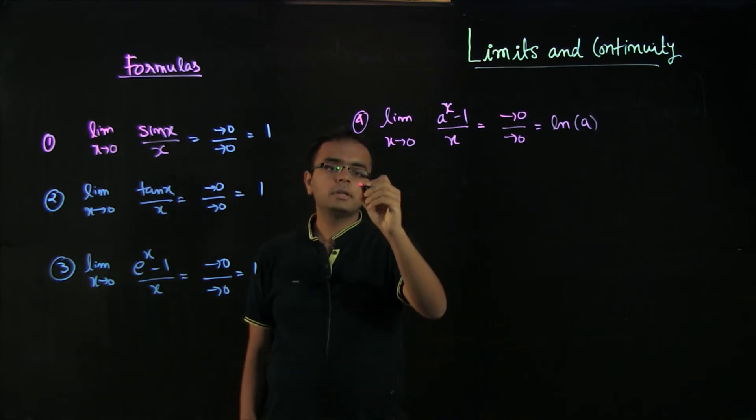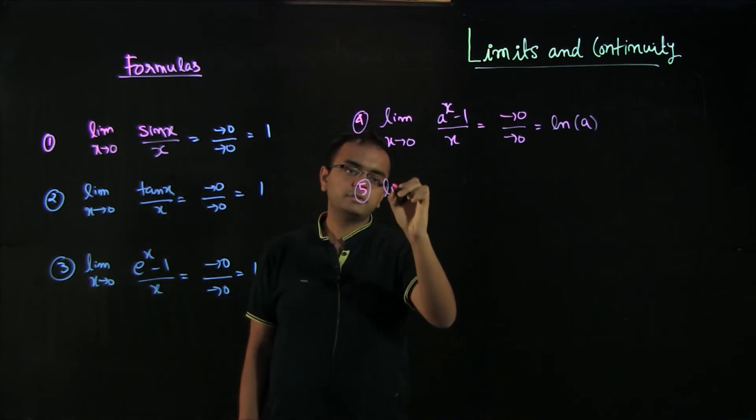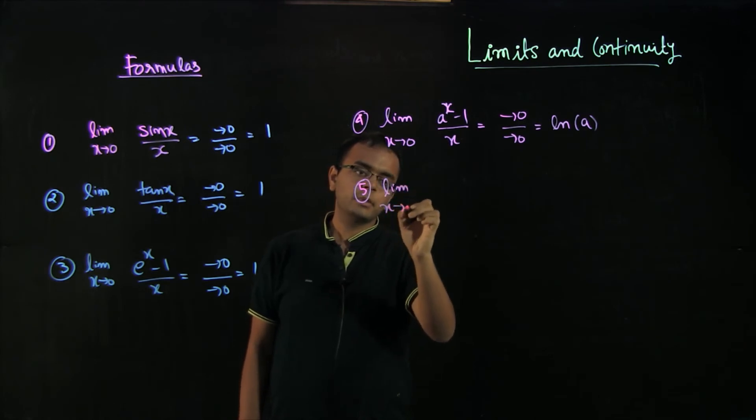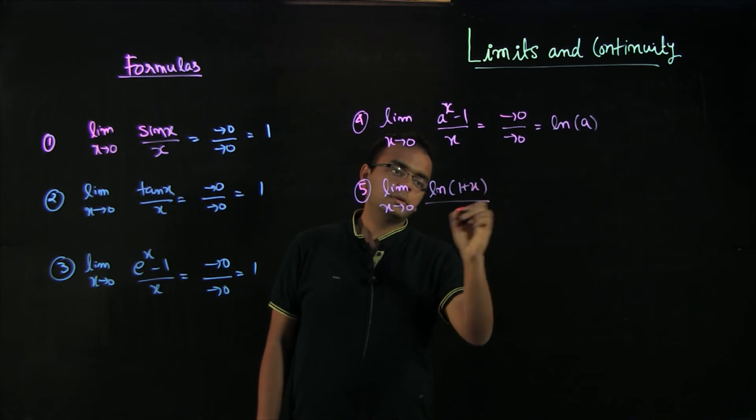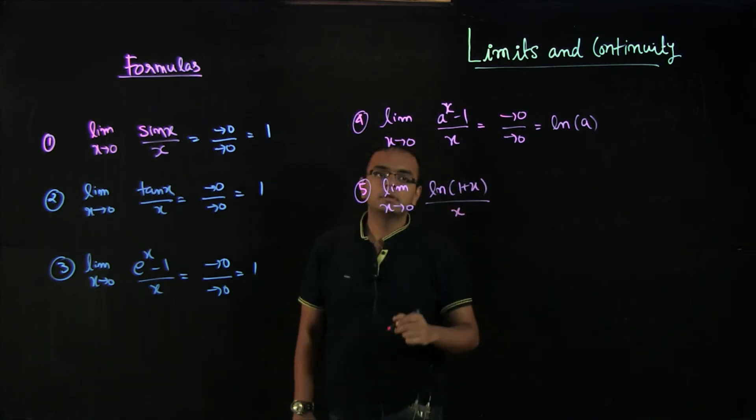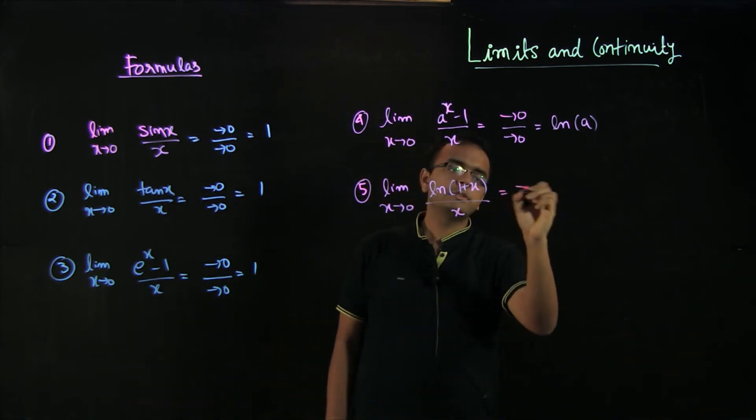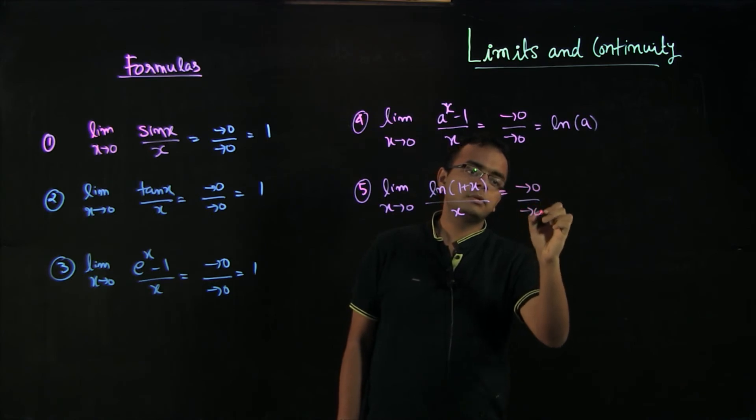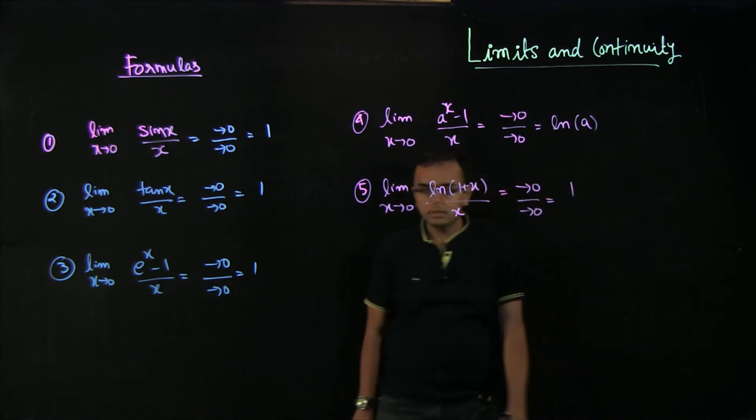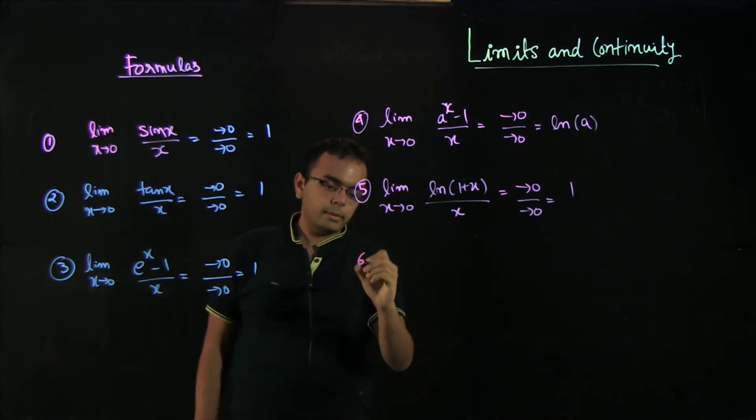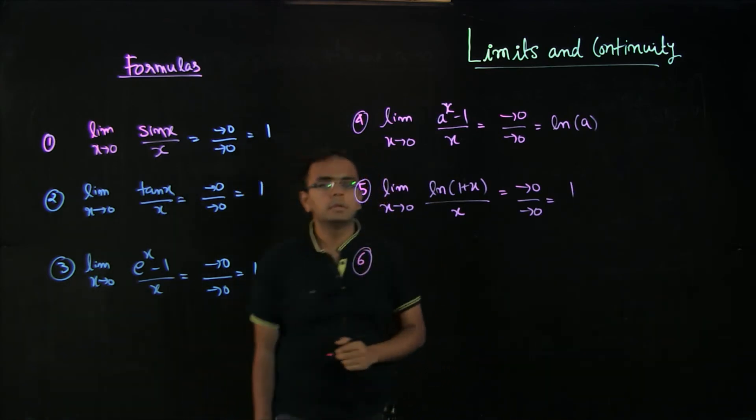Fifth is if you have limit x tends to 0 of log of 1 plus x by x. Log of 1 is again approaching 0 by approaching 0, and this is also equal to 1.